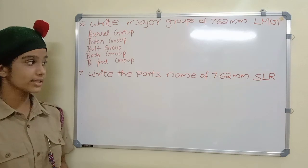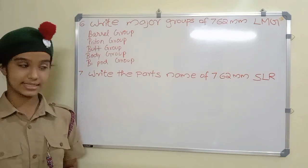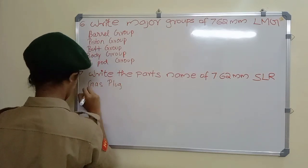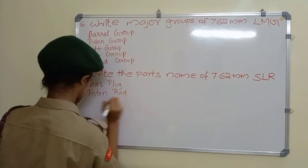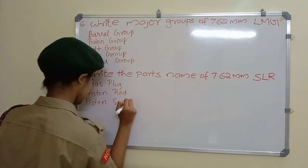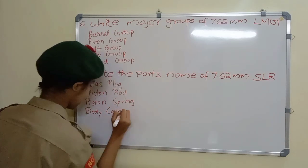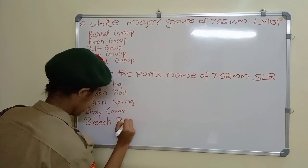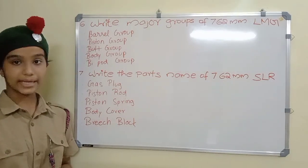Write the parts name of 7.62 mm SLR. Answer: Gas plug, piston rod, piston spring, body cover, and bridge block.